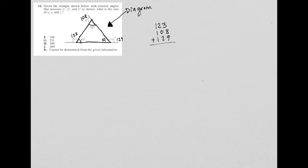And I'll throw all of that into my calculator. So 123 plus 108 plus 129. And what I get is 360. And therefore, my answer is choice J.